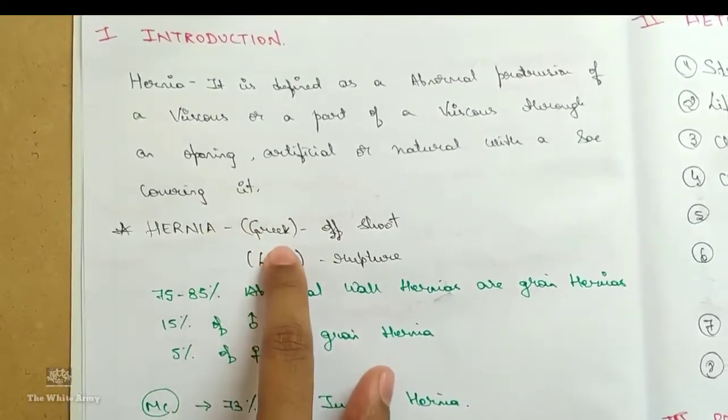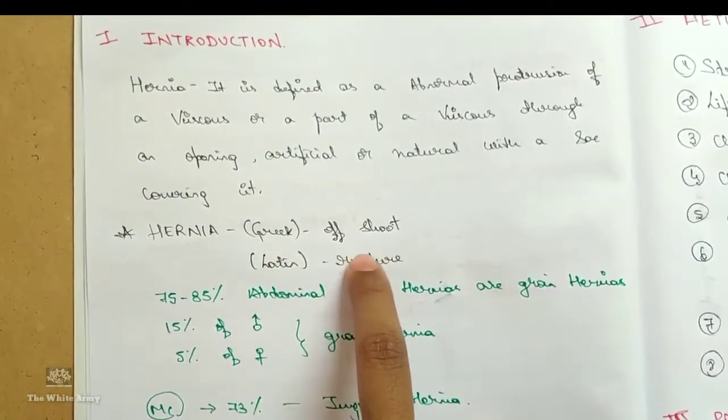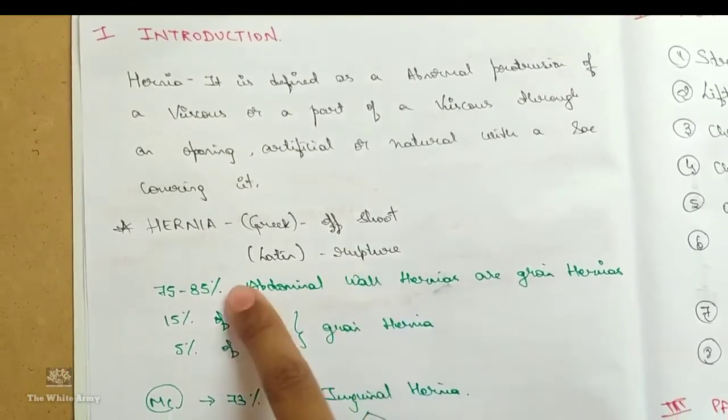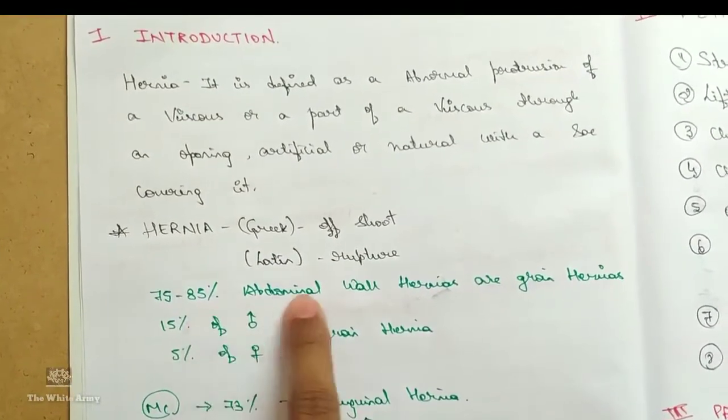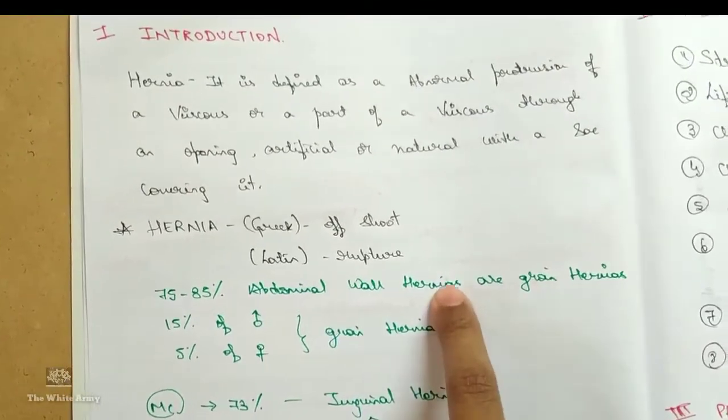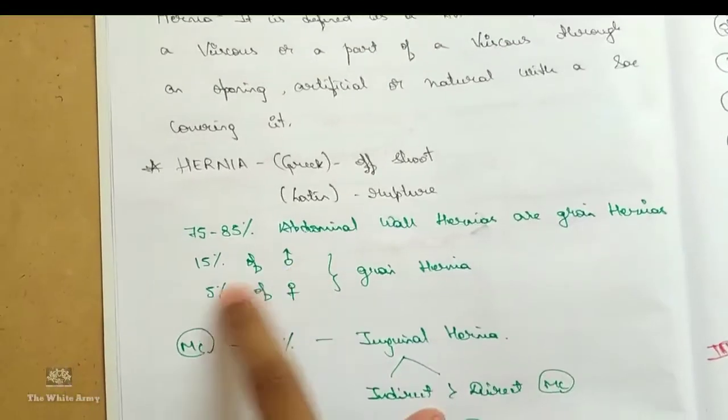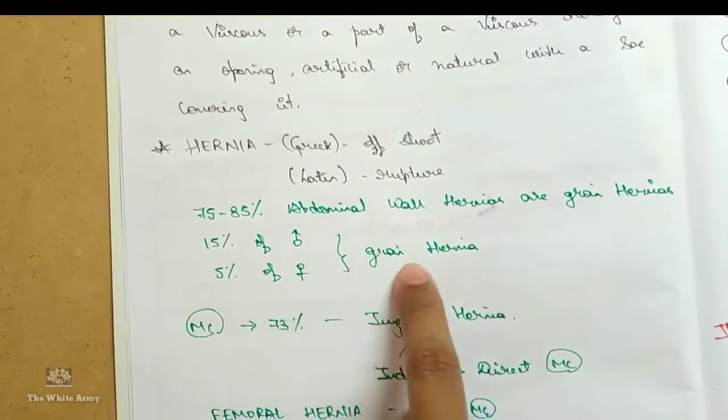Hernia in Greek means offshoot or in Latin means rupture. 75 to 85 percent of abdominal wall hernias are groin hernias and 15 percent of male and 5 percent of female are groin hernias.